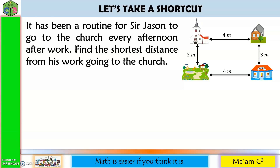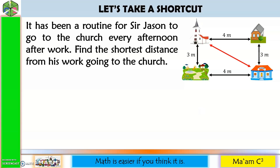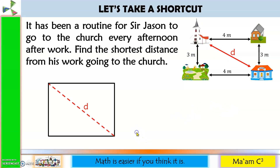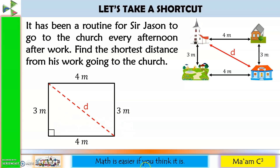Actually, there is. We learn from geometry that the shortest distance between two points is a straight line. So we'll go straight to the church from the school, considering that this way is possible. We'll label the distance d. From this figure, since the two pairs of opposite sides are parallel, then this is a right angle. Therefore, we can use the Pythagorean theorem.